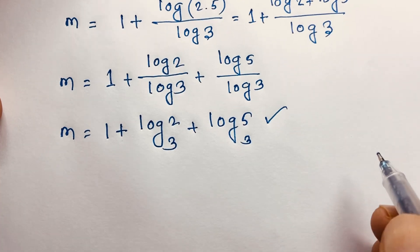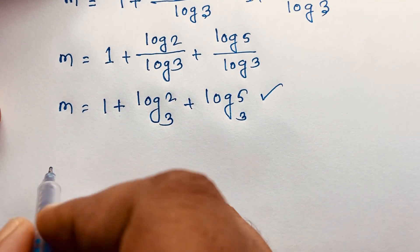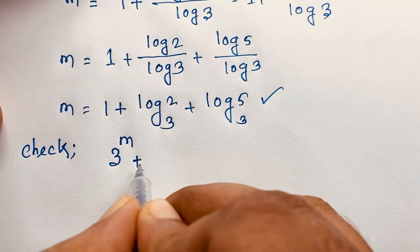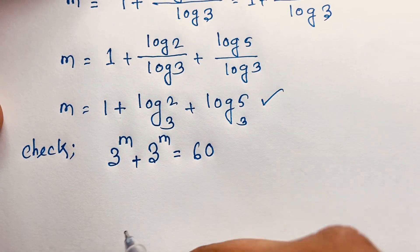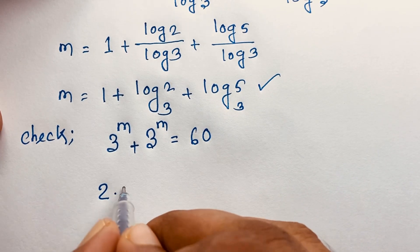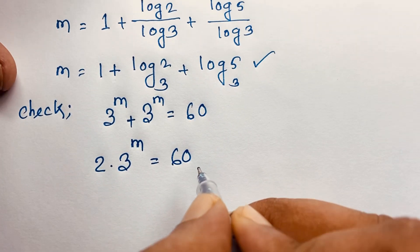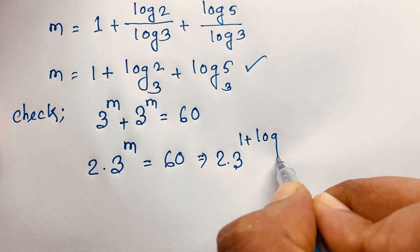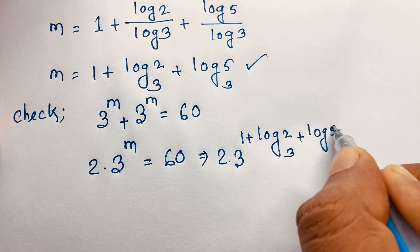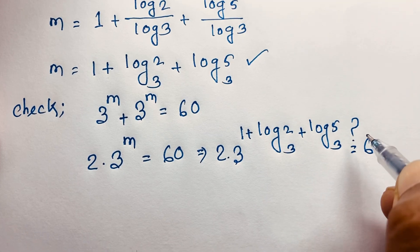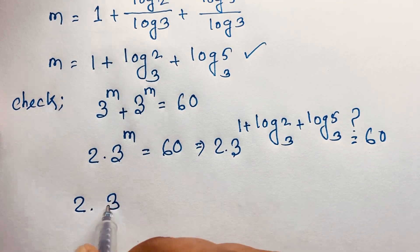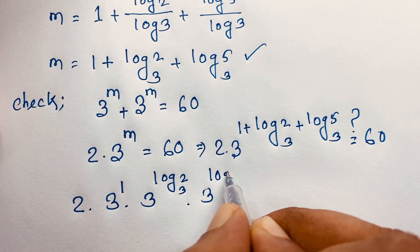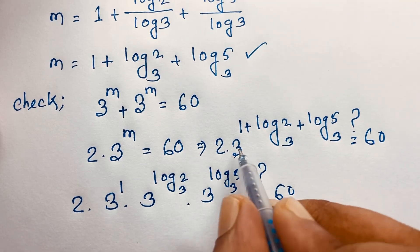This is our final answer: m equals 1 plus log 2 base 3 plus log 5 base 3. Now let's verify by substituting back into the original equation 3 to the power m plus 3 to the power m equals 60. This gives 2 times 3 to the power (1 plus log 2 base 3 plus log 5 base 3) equals 60. Expanding using exponent rules: 2 times 3 to the power 1 times 3 to the power log 2 base 3 times 3 to the power log 5 base 3 equals 60.